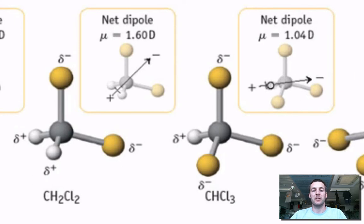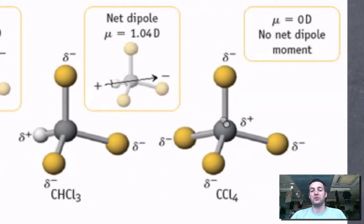And in this case it's over towards this end of the molecule, this end of the molecule being the chlorine end and that end being the hydrogen end. Now if I take the fourth hydrogen and swap it for a chlorine, although every one of the chlorines is slightly negative,